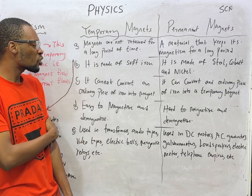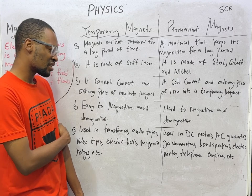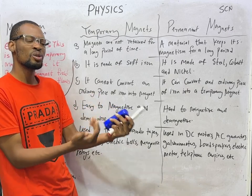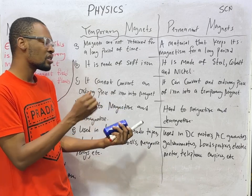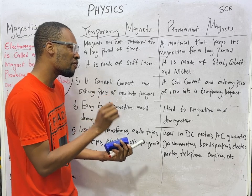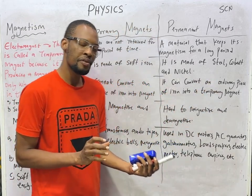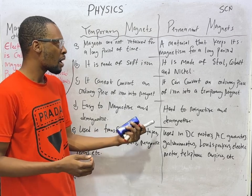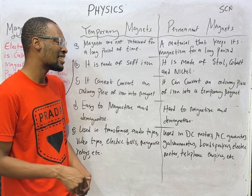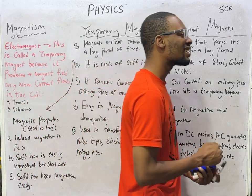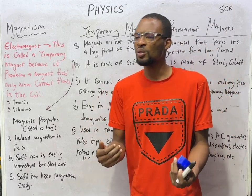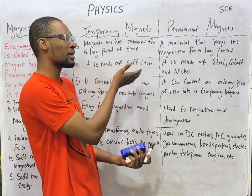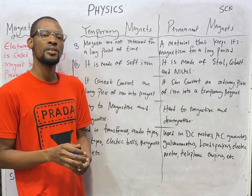Temporary magnets cannot convert an ordinary piece of iron into a magnet — they are not strong enough to do so. Meanwhile, permanent magnets can convert an ordinary piece of iron into a temporary magnet. Temporary magnets are easy to magnetize and demagnetize. Meanwhile, permanent magnets are hard to magnetize and demagnetize. They can retain their magnetism for a very long time; the only thing that will make them lose magnetism is demagnetization, which is itself hard.